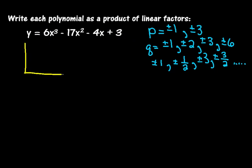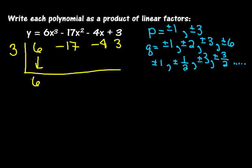I'm going to set up my synthetic division and try positive three. I'll write my six, negative seventeen, negative four, three. Bring my six down. Six times three is eighteen — add down to get one. Three times one is three — add down to get negative one. Three times negative one is negative three — add down to get zero. Now you're probably asking how I picked three. I'll be honest: I went ahead and tried all the possibles to find that three works. I only have ten minutes for these videos, so I skipped ahead a little.